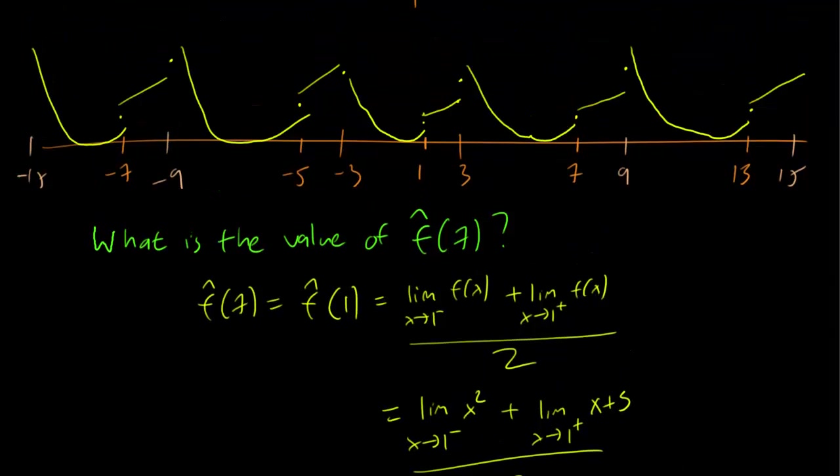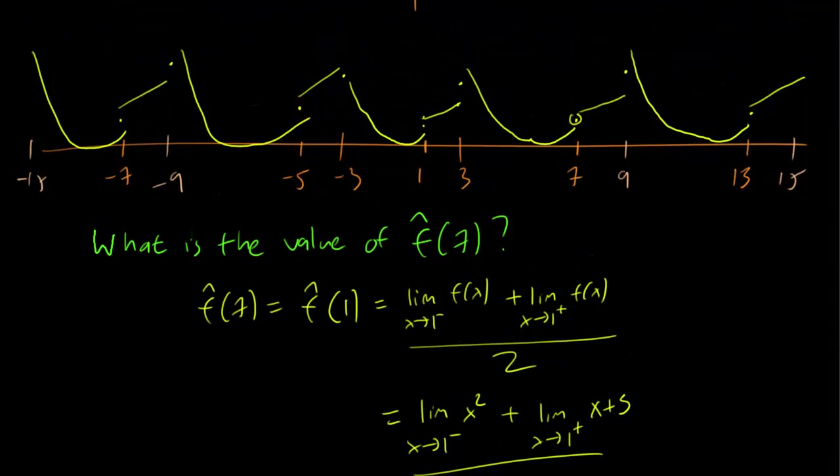So this point is just going to be at the 2.5 level. You can figure out the values of all the other jump discontinuities by a similar method.